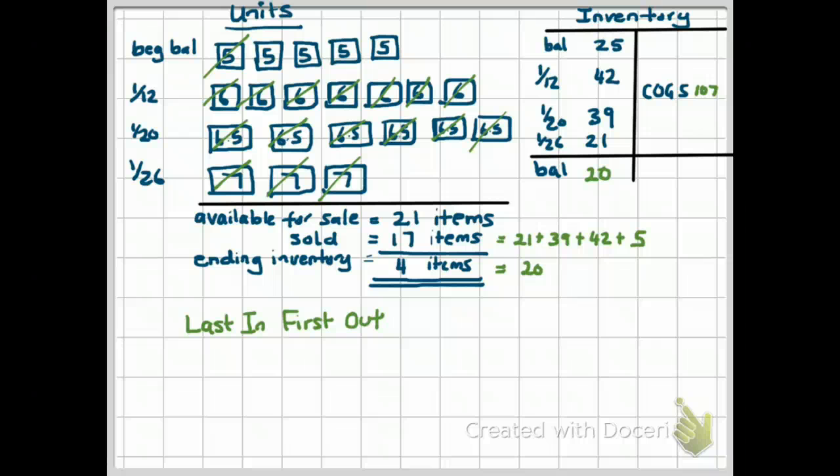But for inventory valuation, a company can use average cost, first-in-first-out, or last-in-first-out. GAAP allows you to use any of the three methods. Next, we'll take a look at why a company would use first-in-first-out or last-in-first-out.